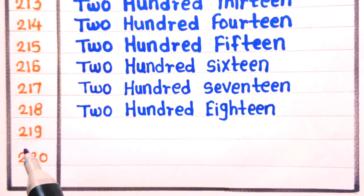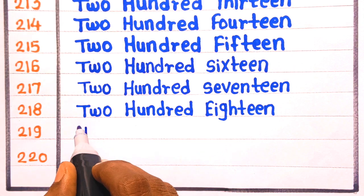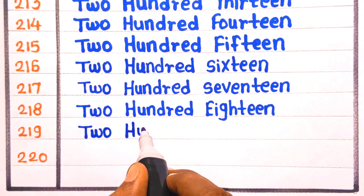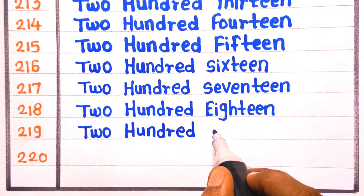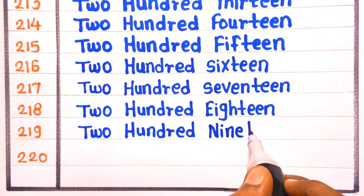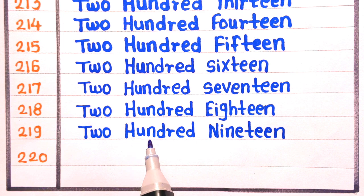Next is 219. T-W-O, two, H-U-N-D-R-E-D, hundred, N-I-N-E-T-E-E-N, nineteen. Two hundred nineteen.